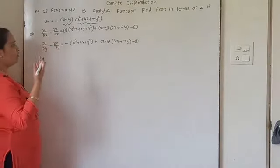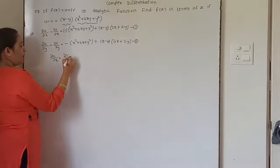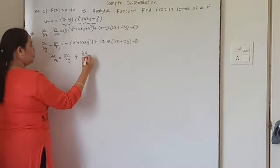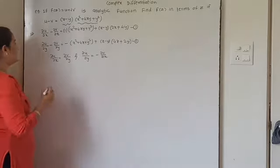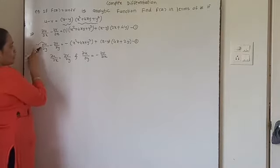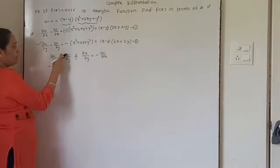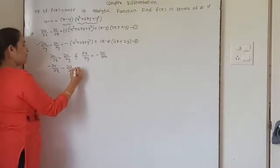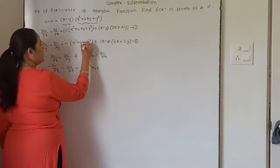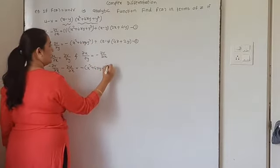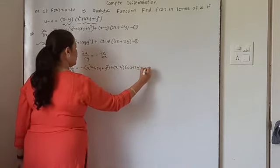Now we will use the Cauchy-Riemann equations in equation 1 or equation 2. The CR equations are: ∂u/∂x equals ∂v/∂y, and ∂u/∂y equals minus ∂v/∂x. If I use the CR equations in the second equation, ∂u/∂y becomes minus ∂v/∂x, and ∂v/∂y becomes ∂u/∂x. The right-hand side remains as is: minus (x squared plus 4xy plus y squared) plus (x minus y) into (4x plus 2y). These are equation number 3.